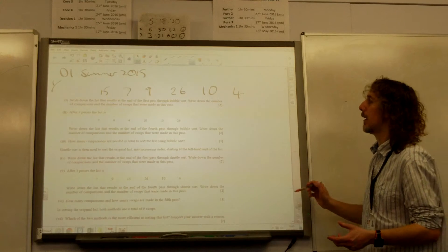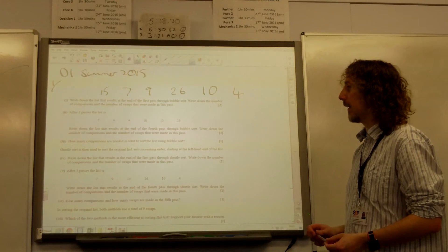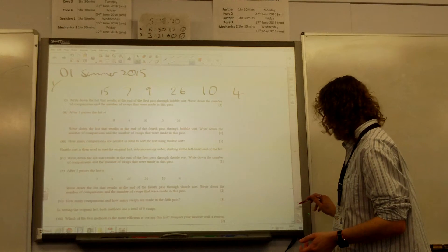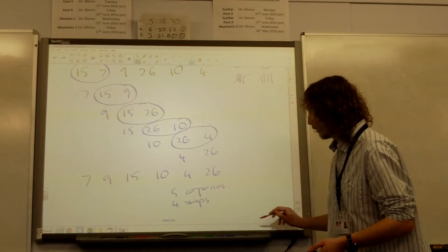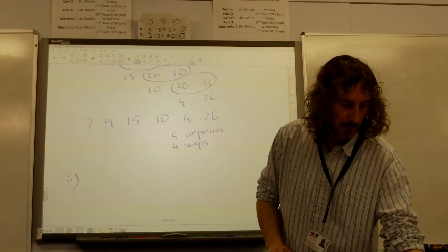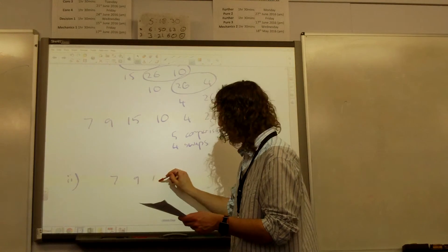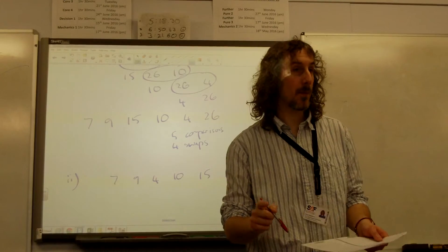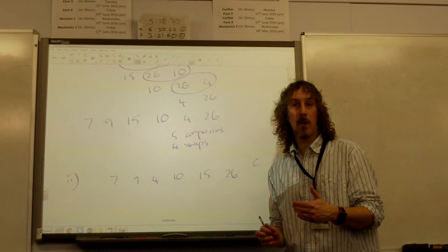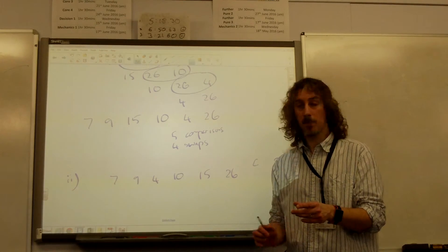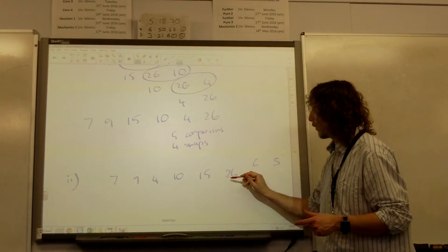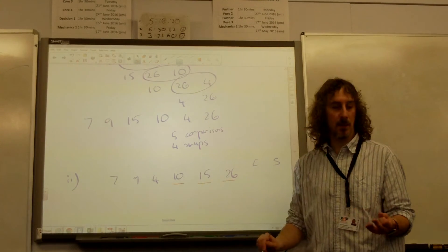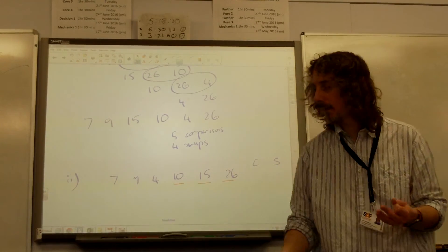Then the question said we need to go back to this bit. After three passes, the list is given there. Write down the list that results at the end of the fourth pass through bubble sort. Write down the number of comparisons and the number of swaps that were made in this pass. So as we go to part two, the starting list for that fourth pass: 7, 9, 4, 10, 15, 26. We're going to record comparisons and swaps again. Now remember what happens with the bubble sort. Every time you do a bubble sort, one of the numbers is placed in the correct position.